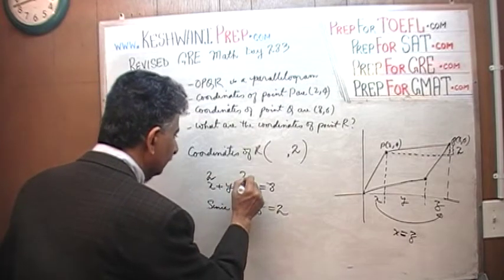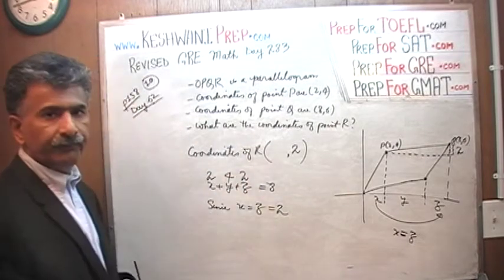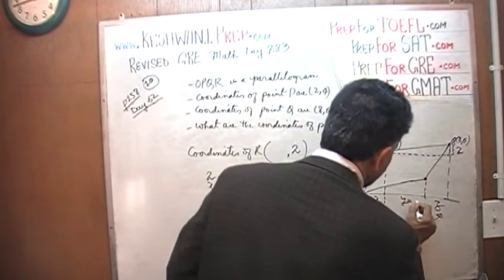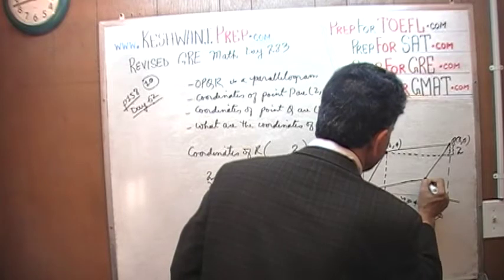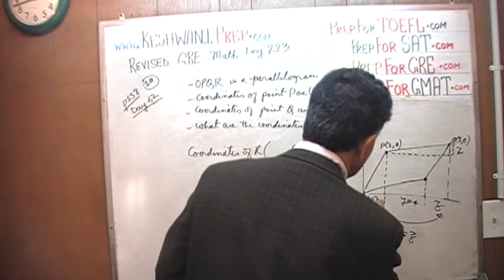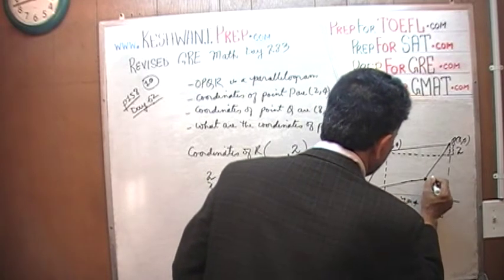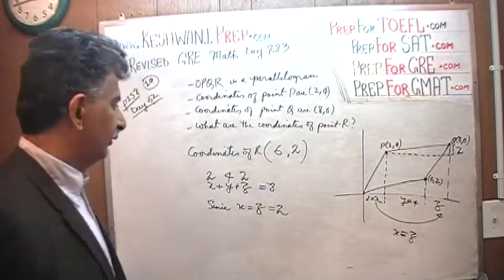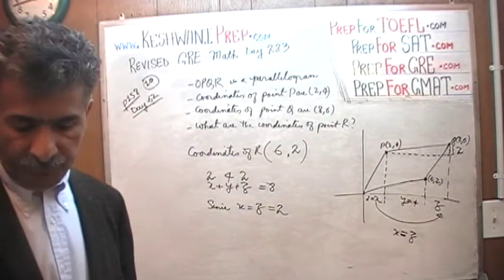Therefore, if x equals 2 and z equals 2, y must equal 4. This distance is 4. Which means this distance from here to here is 2 plus 4, which is 6. So it is 6 and 2. That's it. That's all there is.